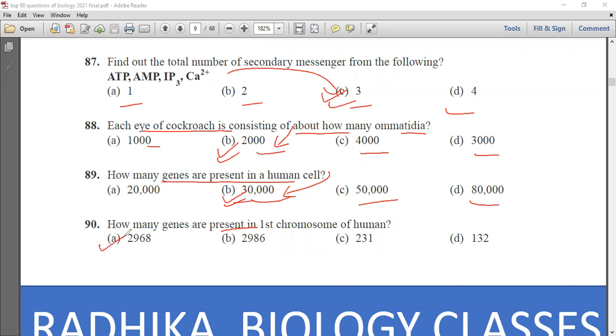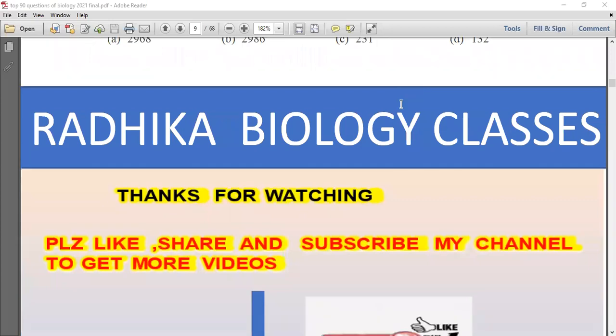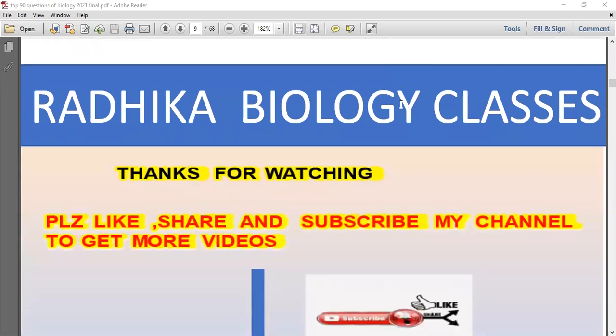The last question is how many genes are present in first chromosome of human? It is 2968 number of genes. Please press the bell icon and subscribe my channel so that we can bring more videos for your revision of upcoming NEET 2021.